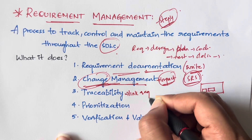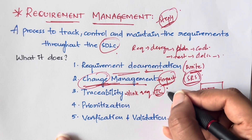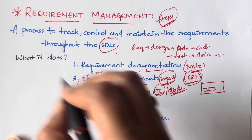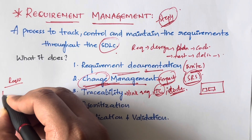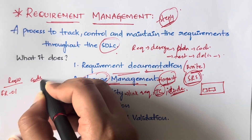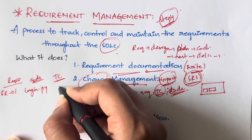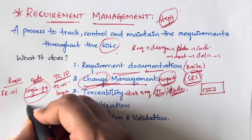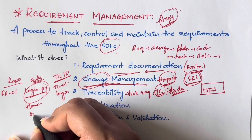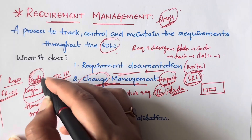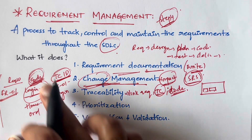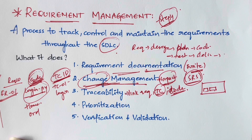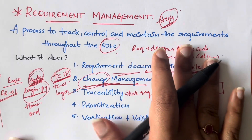Next is traceability. Traceability means you will have a link to each and every requirement, to the code associated with it, and to the test case related to that requirement. For example, for a login page: the requirement ID might be Functional Requirement 01, the code module associated with it is login.py, and the test case ID is TC01. Like this, for every feature — login, home page, placing an order — you document the requirement, the code module, and the test case. This way, even a new person joining after one or two years can understand everything.